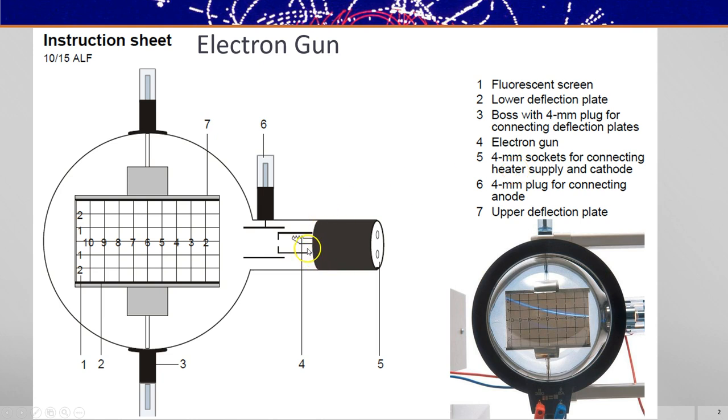It works here when a heater is given a small voltage, a 6 volt AC supply, and a process called thermionic emission emits electrons from the filament here. And those electrons are accelerated towards the positive anode.